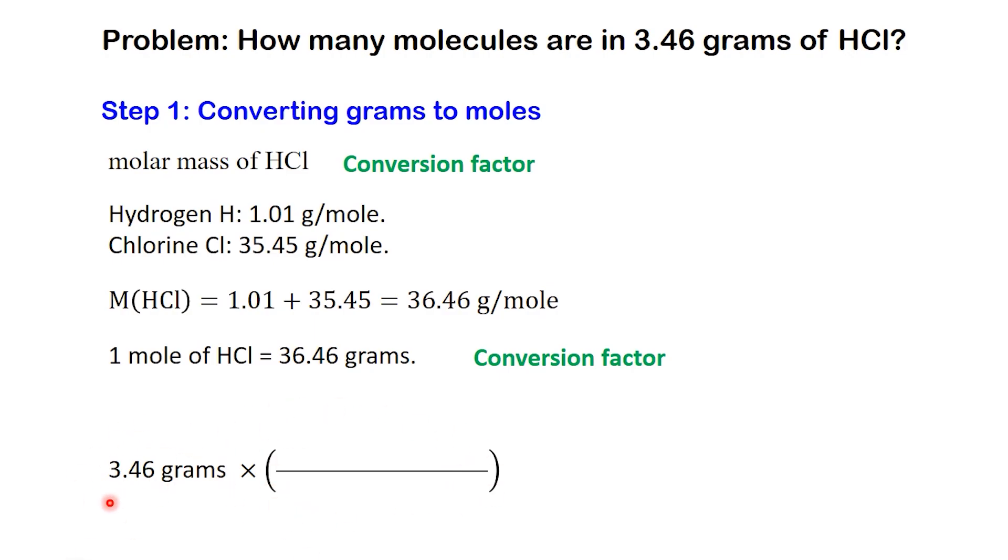We start with 3.46 grams of HCl. We multiply this by a fraction, a ratio made from our conversion factor. Here, the two parts of that conversion are 1 mole and 36.46 grams. Now, we want the unit grams to cancel out, because we're trying to end up with moles. So we put 36.46 grams on the bottom of the fraction, and 1 mole on the top. Here's how the setup looks.